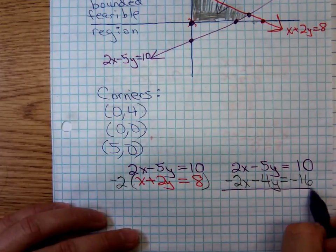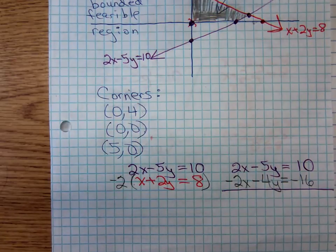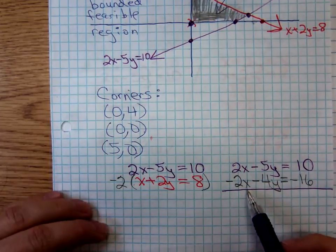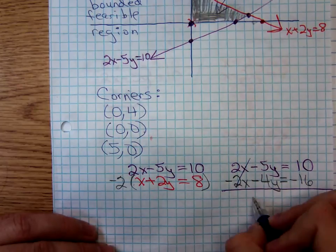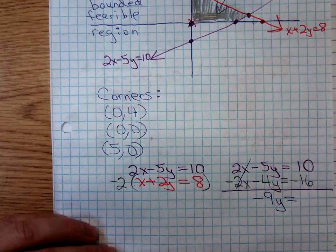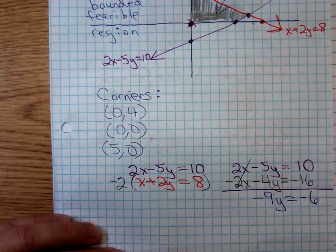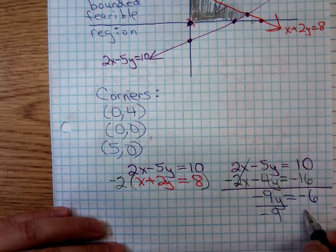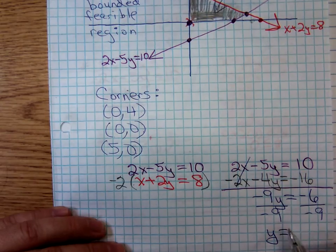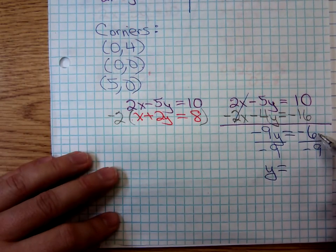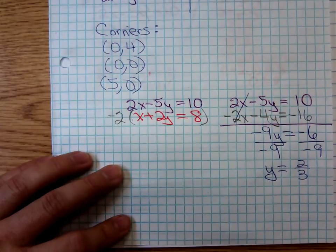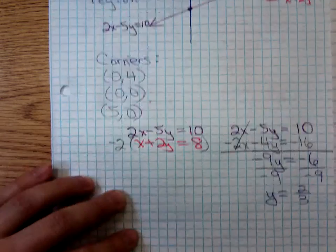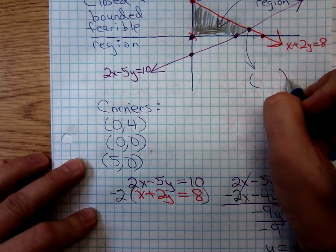Adding the two equations together — that's why we did this, to eliminate the x terms. Adding the y terms together, we get negative 9y equals negative 6. Dividing both sides by negative 9, we can cancel a 3 above and below to give us y equals 2/3. So the y-coordinate of that point of intersection is 2/3.